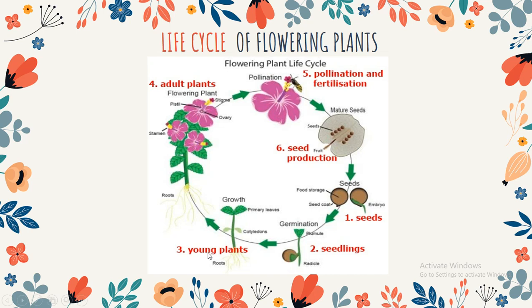Stage three: Young plant. We can think of the young plant as the third stage in the life cycle. We can now identify what kind of plant it is. Stage four: Adult plant. We can think of the adult plant as the fourth stage in the life cycle. At this stage, the plant is fully grown and the flower is produced.